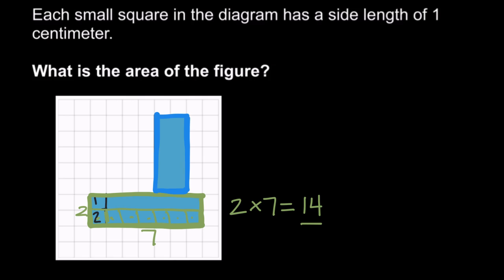And the top rectangle, let's see, we have one row, two, three, four, five rows. And each of those rows has one, two square centimeters. So we have five rows of two square centimeters, or 10.